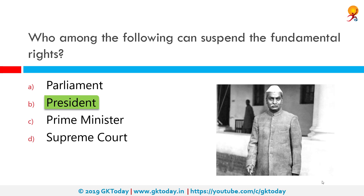During an emergency, the President can suspend all other fundamental rights as well, except Article 20 which states protection in respect of conviction for offenses, and Article 21 which is protection of life and personal liberty. Such suspension requires parliamentary approval.